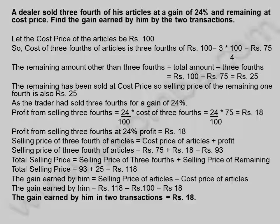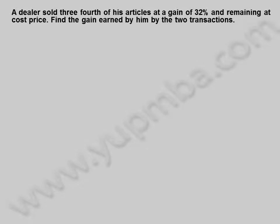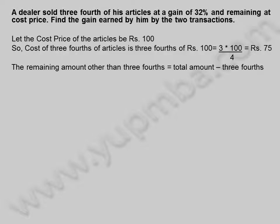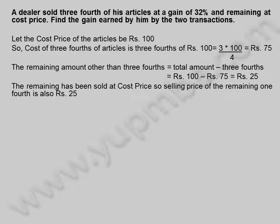Let us see another example. A dealer sold 3/4 of his articles at a gain of 32% and the remaining at cost price. Find the gain earned by him by the two transactions. Let the cost price of the articles be 100 rupees. Cost of 3/4 of articles is 3/4 of 100 rupees, equal to 75 rupees. The remaining amount is 100 rupees minus 75 rupees, equal to 25 rupees.